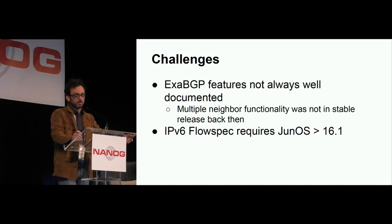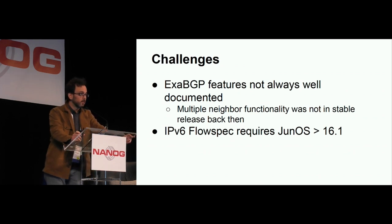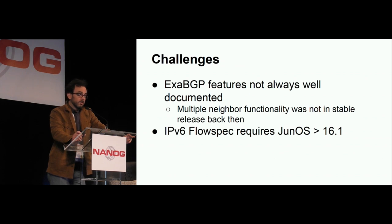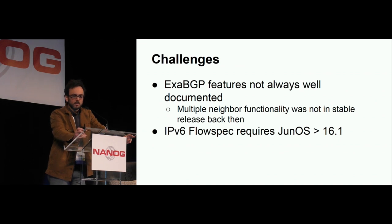We had some challenges. ExaBGP is great and very featureful, but as someone who maintains open source, I know it's hard to maintain documentation. So sometimes it was a little hard to figure out how things were supposed to work. At the time, the multiple-neighbor functionality wasn't there, so we had to do a lot of reading of the code, and we noticed it was actually implemented in the master branch — there was code and it worked, so we were able to use it. I think by now the latest release includes that feature. One thing we haven't tackled is IPv6, and that's unfortunate — it requires Junos newer than 16.1, and that's not always possible. So it's something we will definitely tackle when we can.